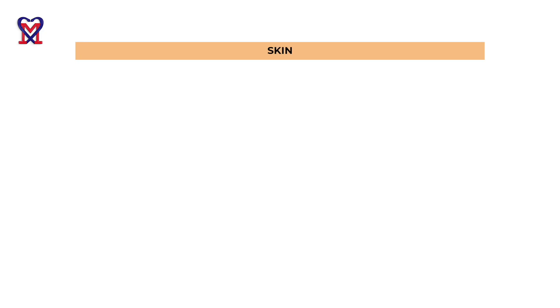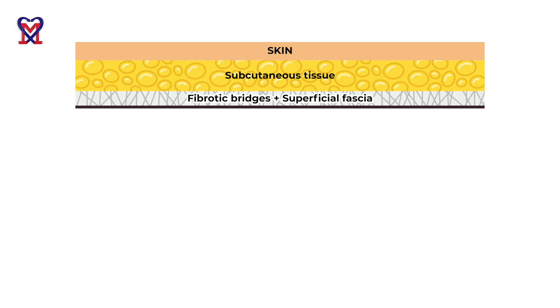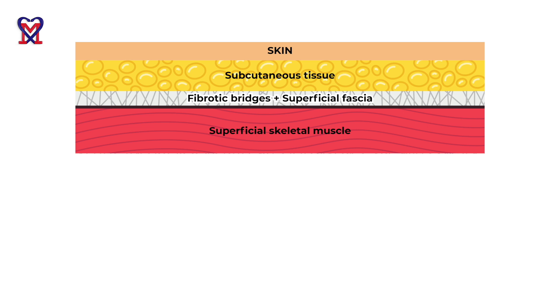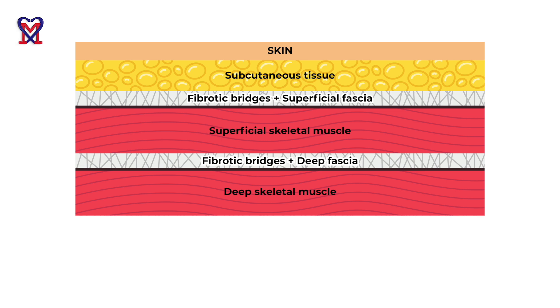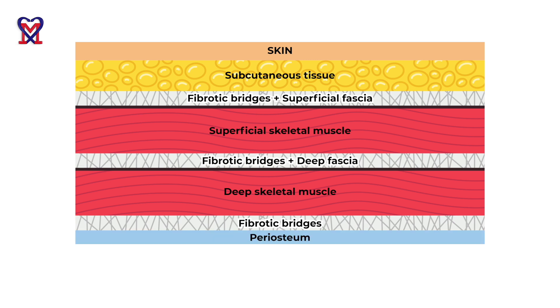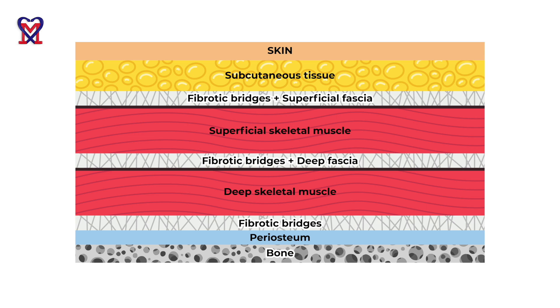Let's look at the basic arrangement of soft tissue in the human body. The first layer is the skin. Then we have subcutaneous tissue. Then we have superficial fascia, which with lines of fibrotic bridges connects superficial skeletal muscle to the skin and subcutaneous tissue. Then we have superficial skeletal muscle, then deep fascia, which separates superficial and deep skeletal muscle, and lines of fibrotic bridges give some fluidity of movement between the layers. Then we have lines of fibrotic bridges connecting deep skeletal muscle to the periosteum, which is attached to the bone. We may have one or two extra layers of skeletal muscles, but they are all separated by fascia with fibrotic bridges.